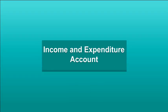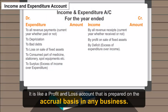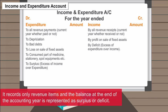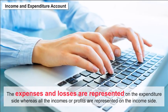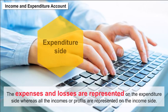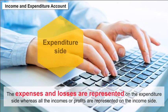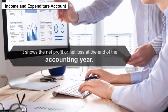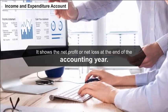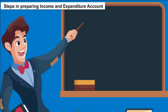Income and expenditure account. It is like a profit and loss account, prepared on the accrual basis. It records only revenue items, and the balance at the end of the accounting year is represented as surplus or deficit. Expenses and losses are represented on the expenditure side, whereas all incomes or profits are represented on the income side. It shows the net profit or net loss at the end of the accounting year.